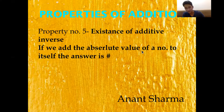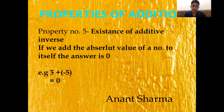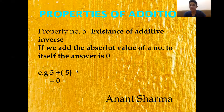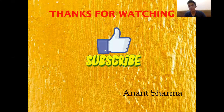So if we add the absolute value of a number to itself, the answer is 0. For example, 5 plus minus 5 equals 0. That's going to do it for today — thank you for watching, leave a like, subscribe, and comment below. If you have any doubts, leave them in the comments and I'll try my best to solve them. Goodbye!